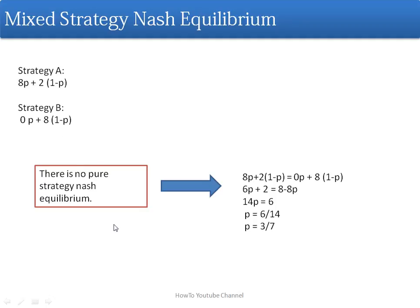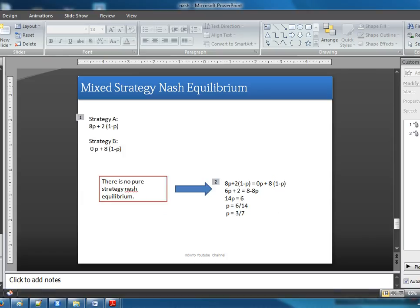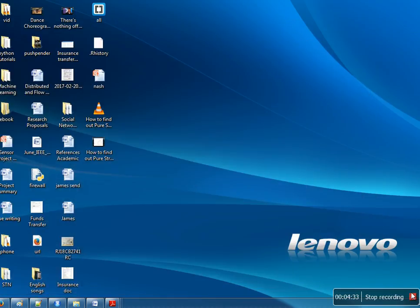I have used color to differentiate the payoffs — the first payoff in red is associated with Player 1, whereas the second number is associated with Player 2.